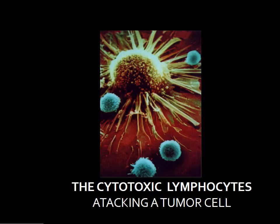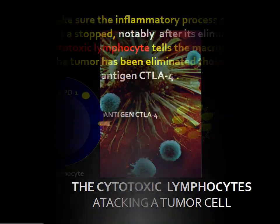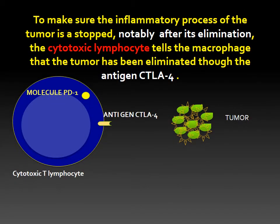The cytotoxic lymphocytes attack a tumor cell. To make sure the inflammatory process of the tumor is stopped — notably after its elimination — the cytotoxic lymphocytes tell the macrophage that the tumor has been eliminated through the antigen CTLA-4.